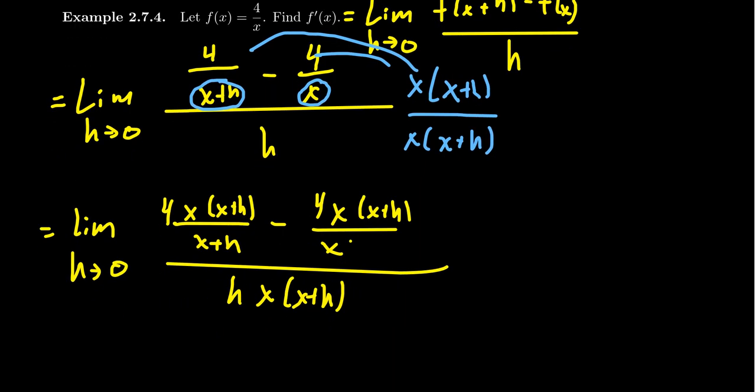Well, because we multiplied the mother fraction by the least common denominator of the baby fractions, you'll notice that the x plus h cancels with the first one, so it's no longer a fraction. And then the x cancels with the second one, so it's no longer a fraction. So this difference quotient simplifies to be 4x minus 4 times x plus h all over h times x times x plus h.